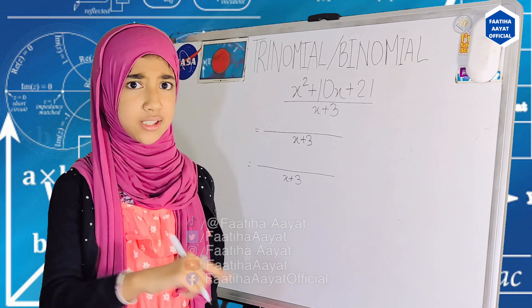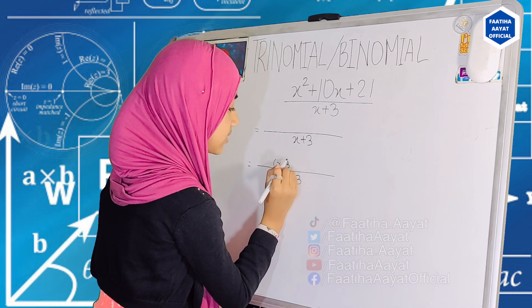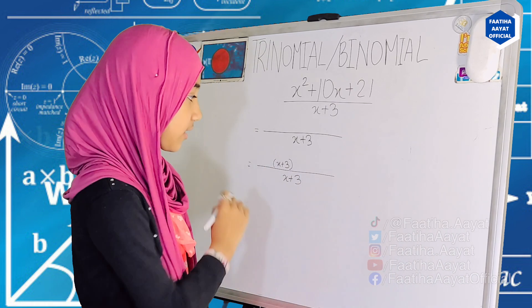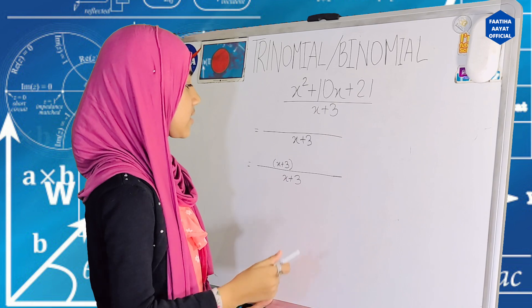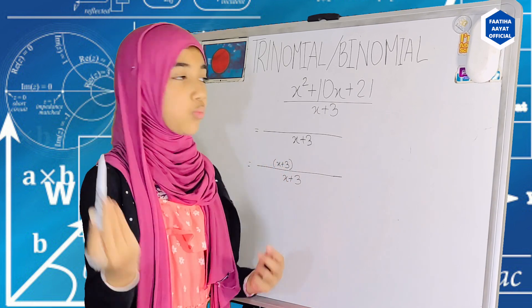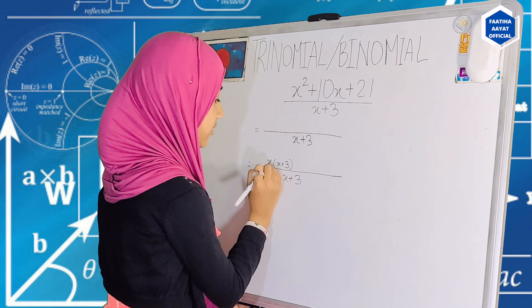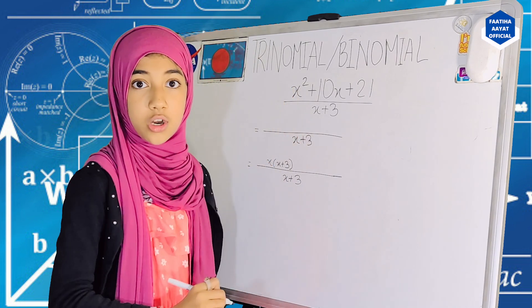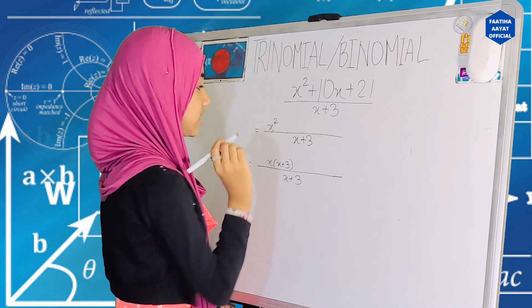Now, since we want to take x plus 3 as common, what we're going to do is put x plus 3 inside a little parenthesis on top in the numerator. Then, what we're going to do is x times what is x squared? x times x is x squared, so we'll put the x outside. That's what we want to do. So, we're going to write x squared right here.